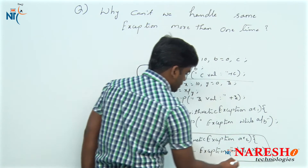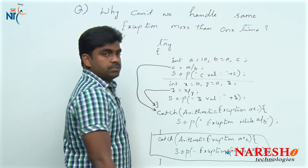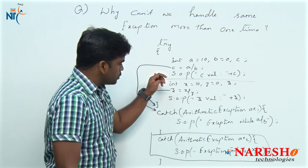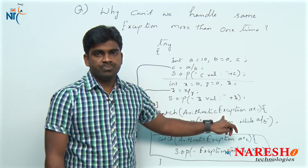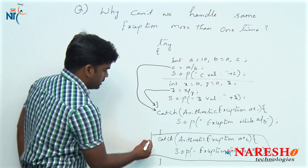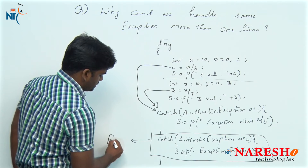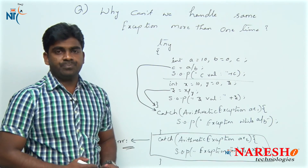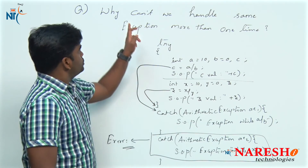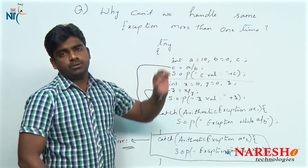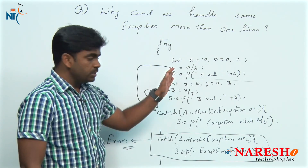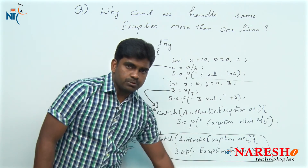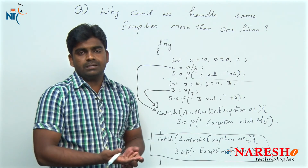This second catch block is an unreachable statement, because we are already handling ArithmeticException in the first catch block. Whatever the situation, control directly comes and catches the first ArithmeticException. The control never reaches the second one. That is why this is a compile-time error — unreachable catch block. Using a single try block, the same exception cannot be handled more than once because the compiler cannot understand your intention.